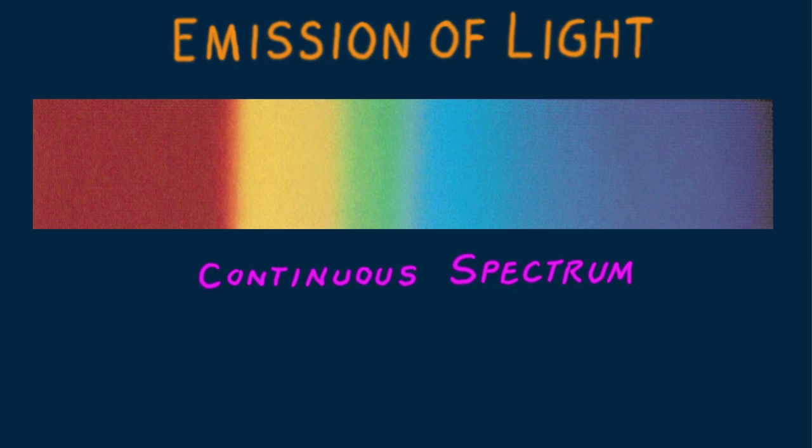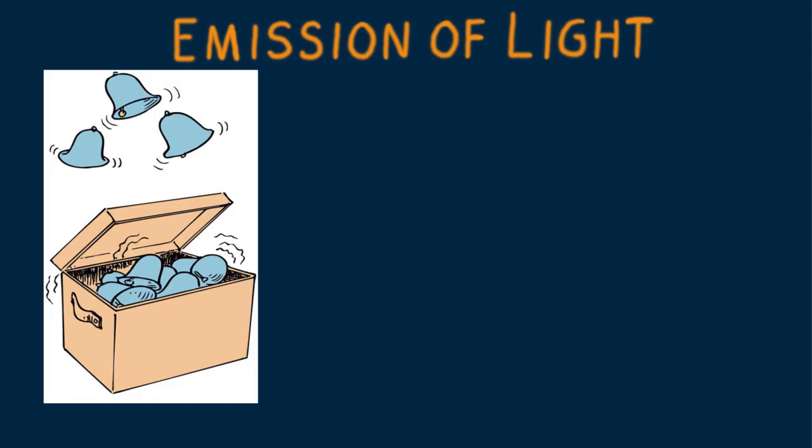Light emitted by atoms far from one another in the gaseous phase is quite different from the light emitted by the same atoms closely packed in the solid phase. This is analogous to the difference in sound from isolated ringing bells and from a box crammed filled with ringing bells.